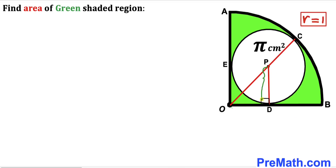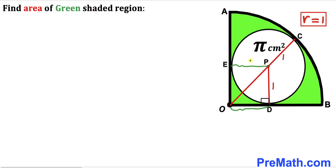PD is the radius of the white circle, so PD equals 1. Likewise, PC is also a radius, so PC equals 1 centimeter as well. Furthermore, segment EP equals segment OD, and since EP is our radius equal to 1, therefore OD is also 1 centimeter. Now let's focus on right triangle ODP.